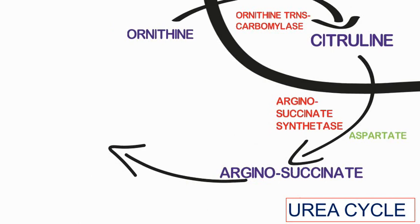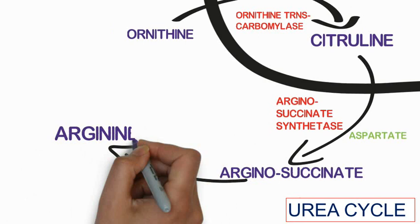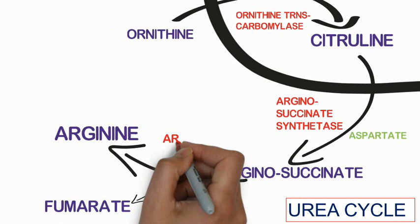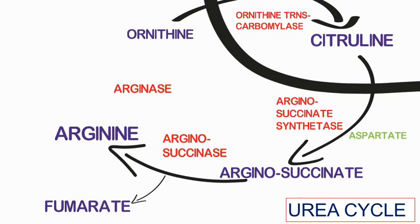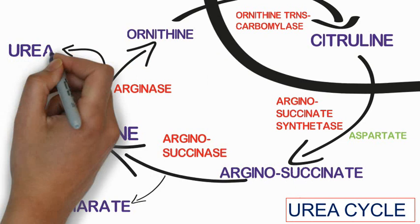Arginosuccinate is split into two molecules: arginine and fumarate, by the enzyme arginosuccinase. Then arginase converts arginine into ornithine and urea.